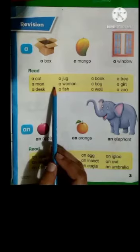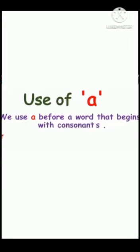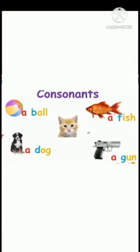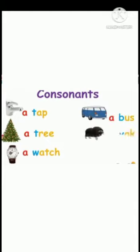Firstly we will revise the use of A. We use A before a word that begins with consonants. Look at some examples: a ball, a dog, a fish, a gun, a cat, a tap, a tree, a watch, a bus, a fork. I hope it's clear to you now.